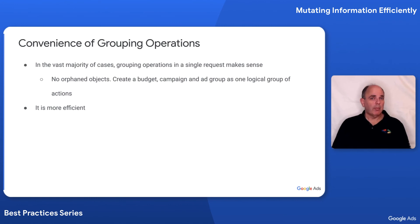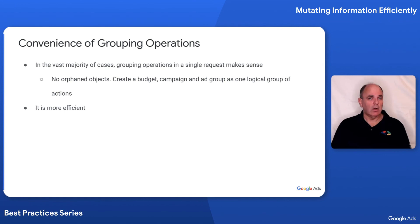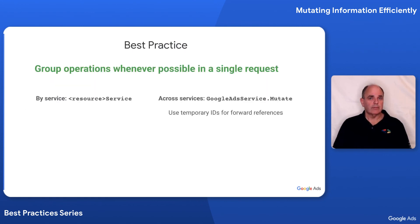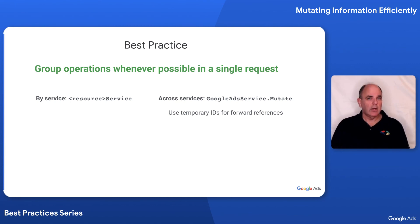So why is it helpful to group operations? There are two large advantages. For the vast majority of cases, when you create a budget, a campaign, and an ad group, they're all created as one logical unit — they will all succeed together or fail together. The second reason is that it is also vastly more efficient. In summary, we recommend you group operations whenever possible into a single request. If all operations are specific to one service, make a single request with multiple operations to that service. If you have to coordinate across services, make a single request to the Google Ads Service Mutate and specify all the services and all the operations needed.